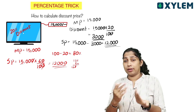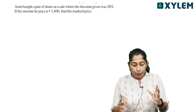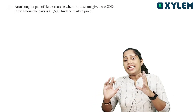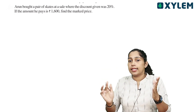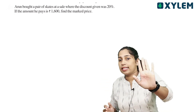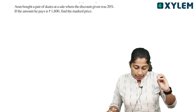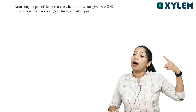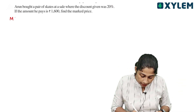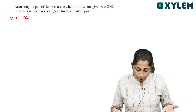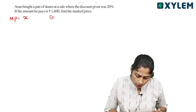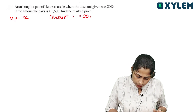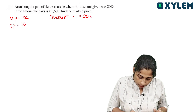Here is a practice question. Anu bought a pair of skates at a sale. A discount was given as 20%, which means the selling price is 80% of the marked price. If the amount he pays is 1,600, find the marked price. The discount percentage is 20% and the selling price is 1,600.